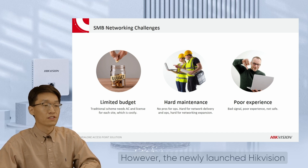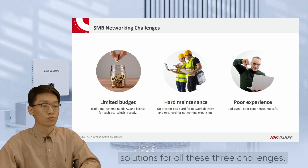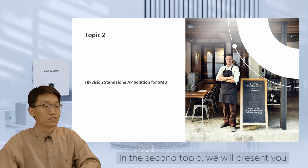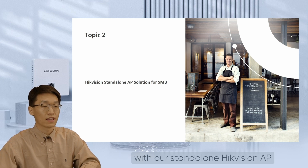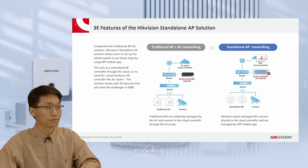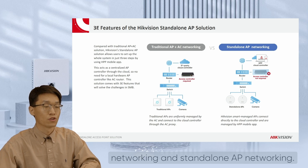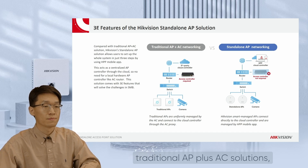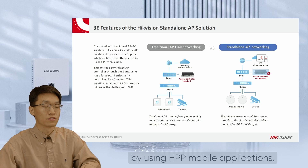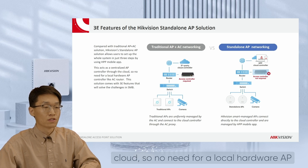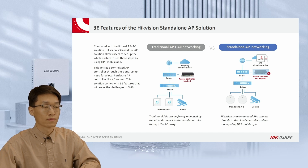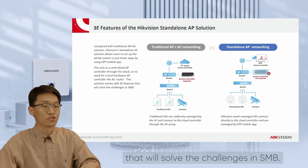However, the newly launched HackerVision Smart Managed AP products provide new solutions for all three challenges. In the second topic, we will present our standalone HackerVision AP solution and help you understand how our SMB managed AP products solve the above challenges. Compared with traditional AP plus AC solution, HackerVision's standalone AP solution allows users to set up the whole system using the HPP mobile application. HPP cloud controller acts as a centralized AP controller through the cloud, so no need for a local hardware AP controller like an AC router. This solution comes with 3E features that will solve the challenges in SMB.